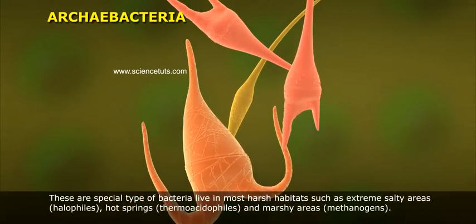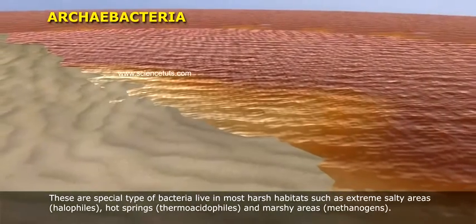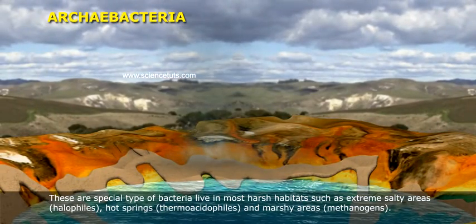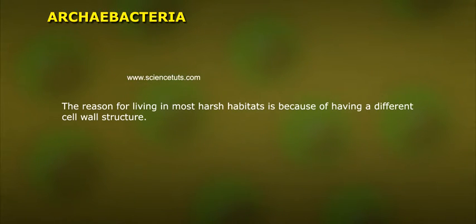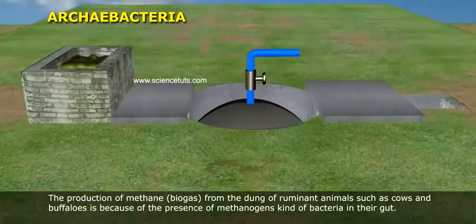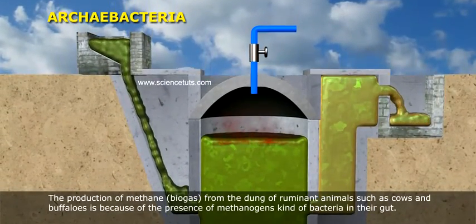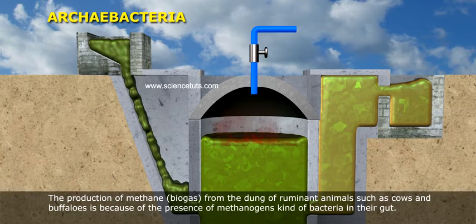Archebacteria: These are a special type of bacteria that live in the most harsh habitats such as extreme salty areas (halophiles), hot springs (thermoacidophiles), and marshy areas (methanogens). The reason for living in such harsh habitats is because of their different cell wall structure. The production of methane (biogas) from the dung of ruminant animals such as cows and buffaloes is due to the presence of methanogen bacteria in the gut.